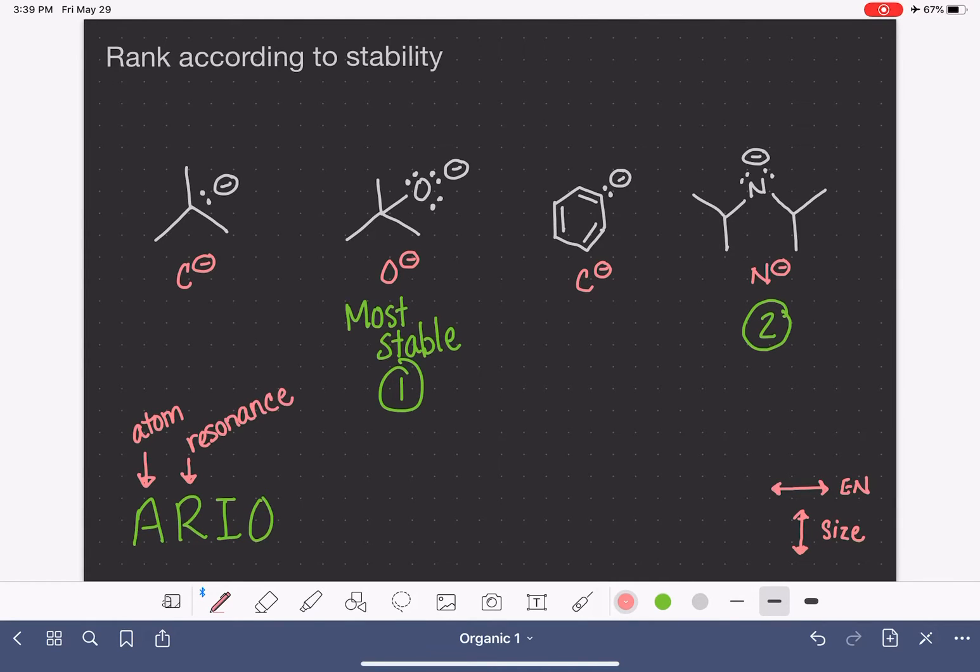And this is a yes or no question. Is there resonance, yes or no? And if the answer is yes, how much resonance is there? So for the first molecule, if you analyze this first molecule here, there is no resonance structure that we can draw for this molecule at all. It is not an option.